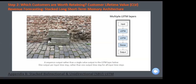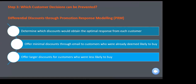For customer lifetime value prediction, always use advanced techniques and don't rely on just one. Time series approaches for CLV are honestly obsolete — nobody uses those these days. Typically we use deep learning techniques like Long Short-Term Memory (LSTM). Importantly, not just one LSTM — multiple LSTMs are stacked in series, and from there we develop the output. Finally, for which customer decisions can be prevented, we use promotion response modeling, looking at what channels customers use and what conversions they've made.